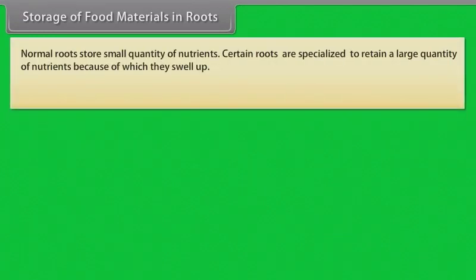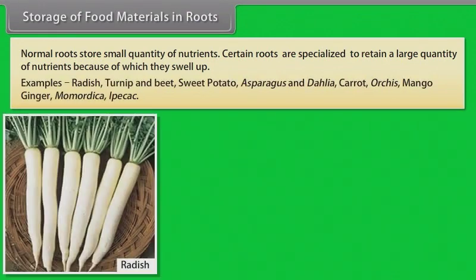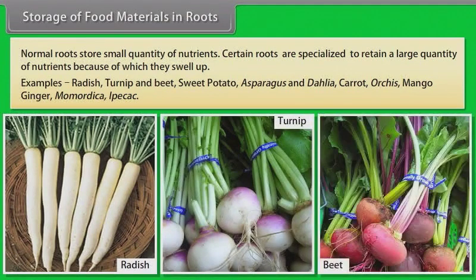Storage of food materials in roots — normal roots store small quantities of nutrients. Certain roots are specialized to retain large quantities of nutrients, because of which they swell up. Examples: radish, turnip and beet, sweet potato, asparagus and dahlia, carrot, colocasia, mango ginger, Momordica, Ipecac.